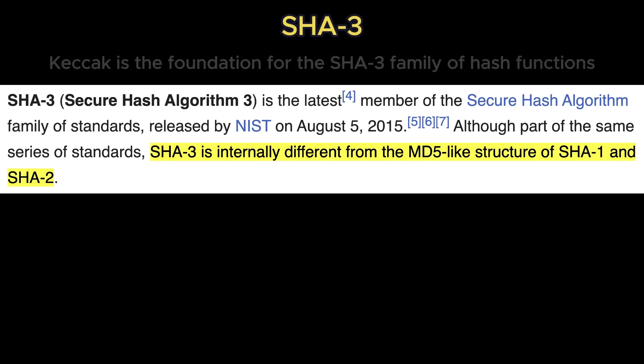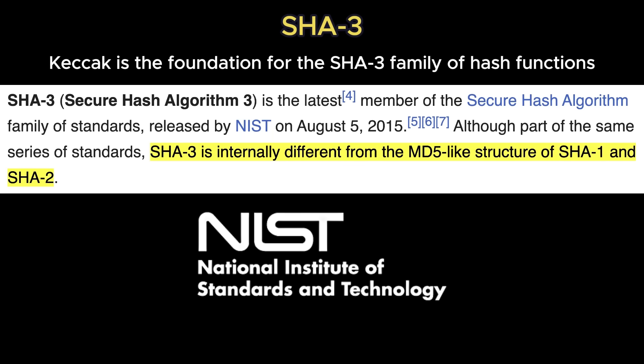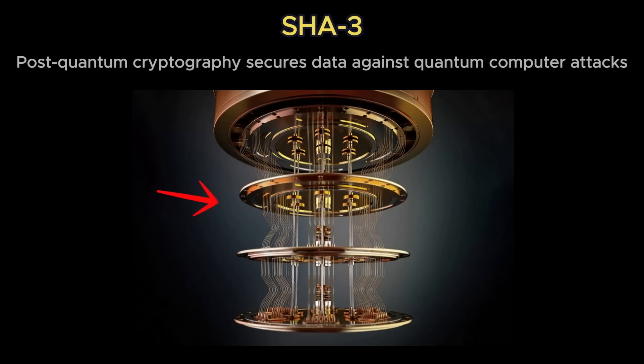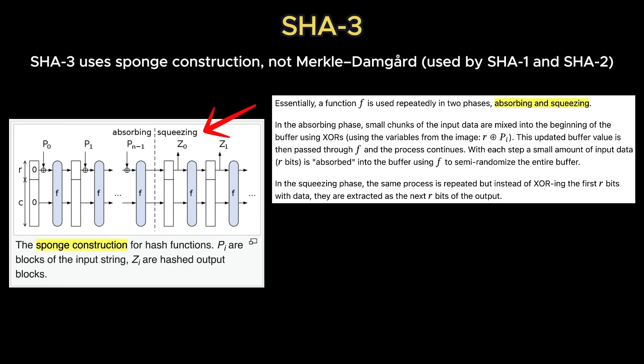SHA-3, built on the Keccak algorithm, was chosen through an open National Institute of Standards and Technology competition — the same process used to standardize algorithms like the Advanced Encryption Standard (AES) — as the next-generation standard for post-quantum cryptography. It's structurally different from SHA-2, using a sponge construction instead of the Merkle-Damgård design, making it more resistant to certain theoretical attack vectors.